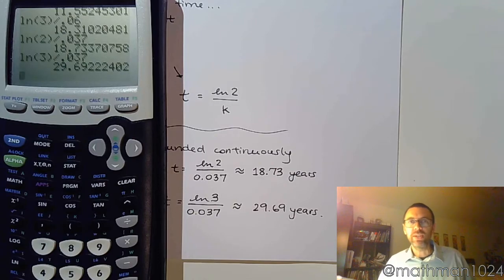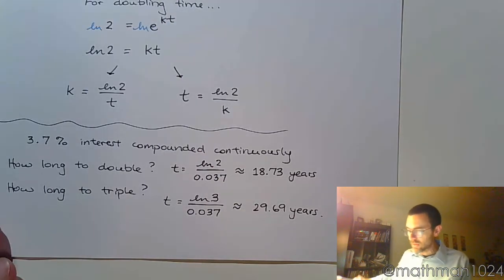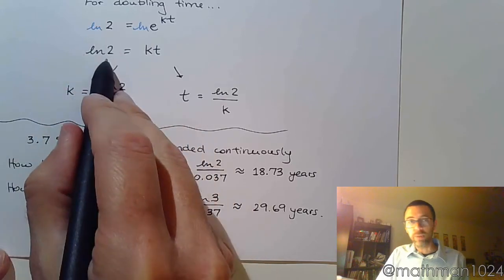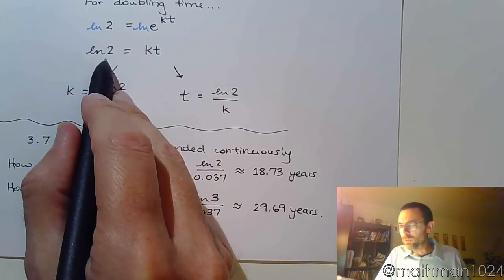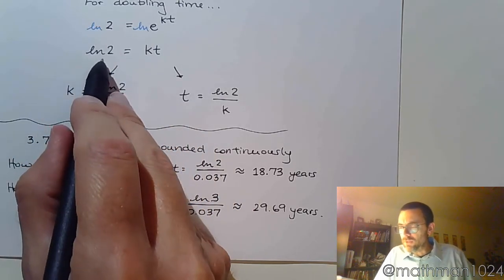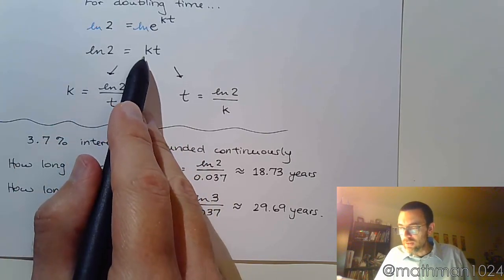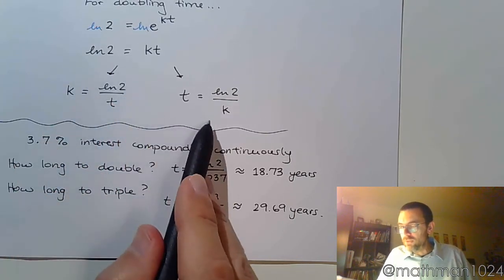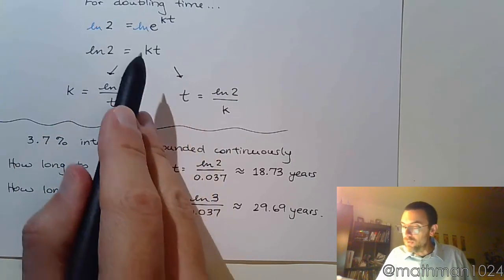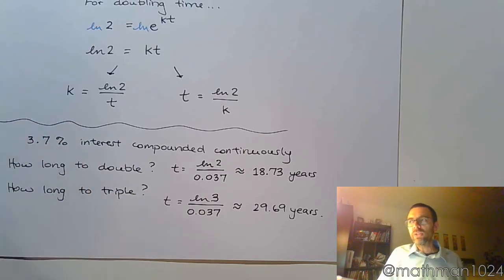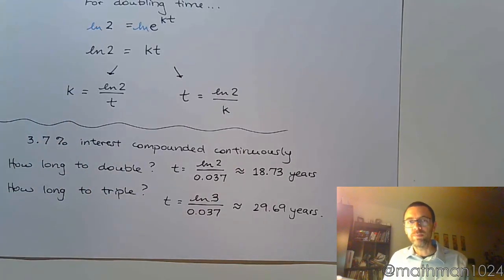It's just that easy. If you're doubling something, natural log of 2 equals k times t. If you know the rate you can quickly find the time, and if you know the time you can quickly find the rate. We'll see how this applies in more problems in the next video.